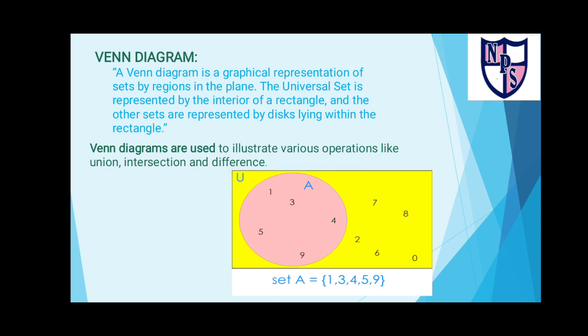As you can see in the example, the yellow shaded area is the universal set which is a rectangle, and the circle or disc-like shape is a set which is part of the universal set.